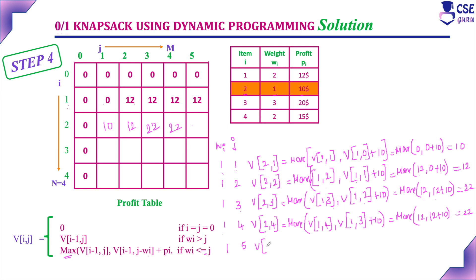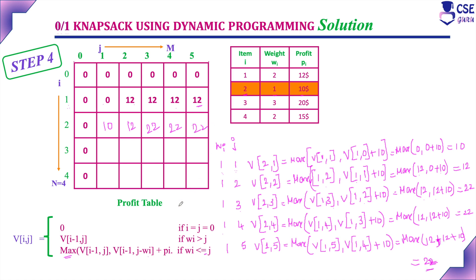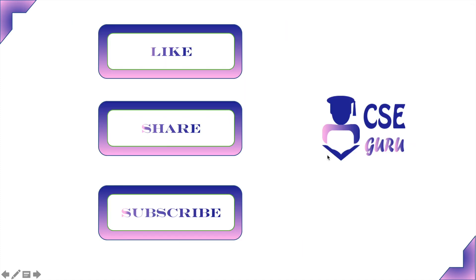For j=5: V(2,5) = max(V(1,5), V(1,4) + 10) = max(12, 12+10) = max(12, 22) = 22. This is the profit table at the end of step 4, considering the second object with weight 1 and profit 10. We have completed up to step 4. Steps 5 and 6 will be discussed in the next part. Thank you for watching this video.